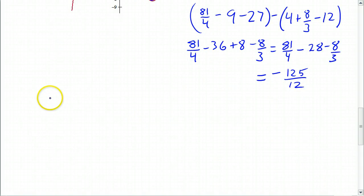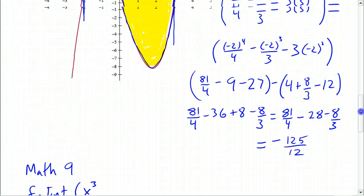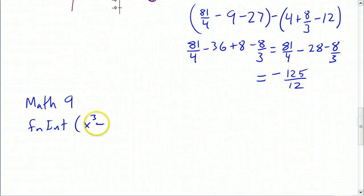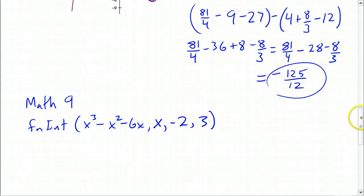If your calculator doesn't have the new operating system, or it's a TI-83, go to Math 9 for function integration. Put in the function — x cubed minus x squared minus 6x — then a comma, tell it the variable x, enter the lower limit, enter the upper limit, hit Enter, and it gives you negative 125 over 12.